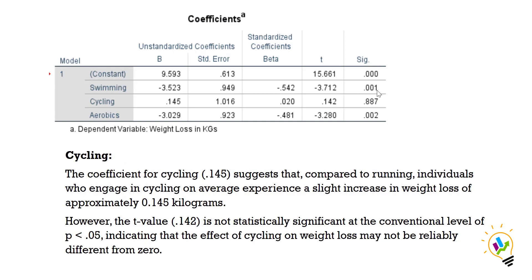For cycling, the coefficient is 0.145, indicating that compared to running, individuals who engage in cycling on average experience a slight increase in weight loss of approximately 0.145 kg. However, the significance value is 0.887, which is greater than 0.05, so this difference is not statistically significant.